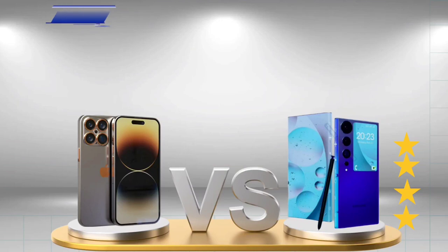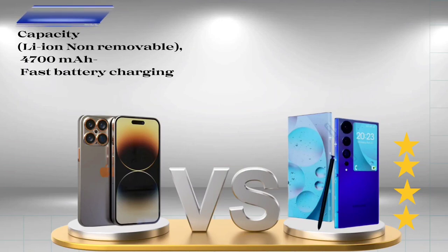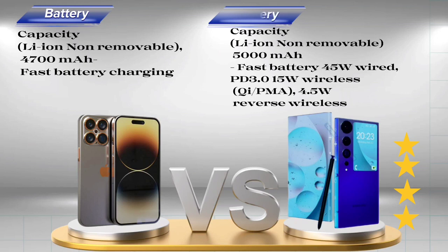Battery — iPhone 15 Ultra: Li-Ion non-removable, 4,700 mAh, fast charging. Samsung Galaxy S23 Ultra: Li-Ion non-removable, 5,000 mAh, fast charging — 45W wired, PD 3.0, 15W wireless (PMA/Qi), 4.5W reverse wireless.